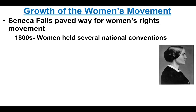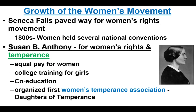The movement grows very slowly and at different rates in different regions of the country. Several national conventions are held after Seneca Falls in the 1800s across the country, mostly in the Northeast and New England region. Gradually it starts moving out into the far West, but the far West proves more accepting of women's suffrage than the East.